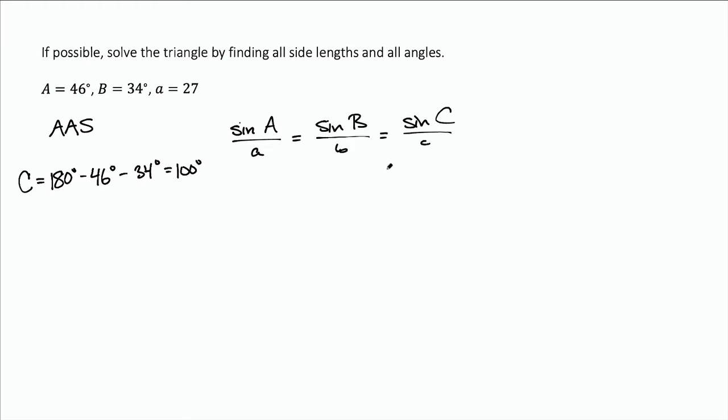Now if I plug everything in that I know, and notice I have all three angles, I'm actually going to flip the fractions because the things I don't know I want those on top. So a over sine of 46 degrees equals b over sine of 34 degrees equals c over sine of 100 degrees. And I actually do know that side a, that was given to me, is 27.